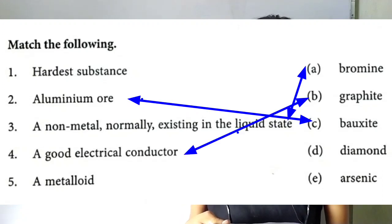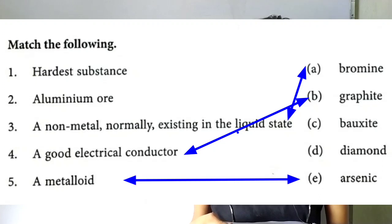Fourth, a good electrical conductor B. Graphite, a metalloid E. Arsenic.